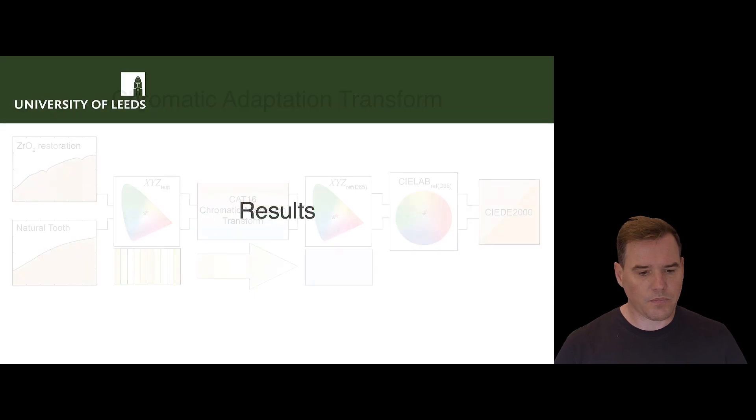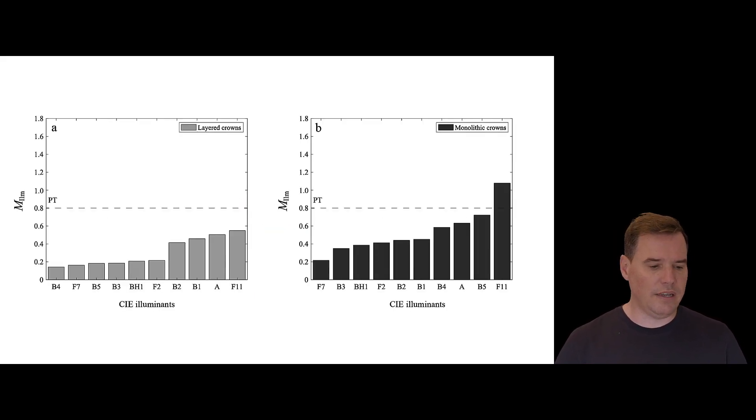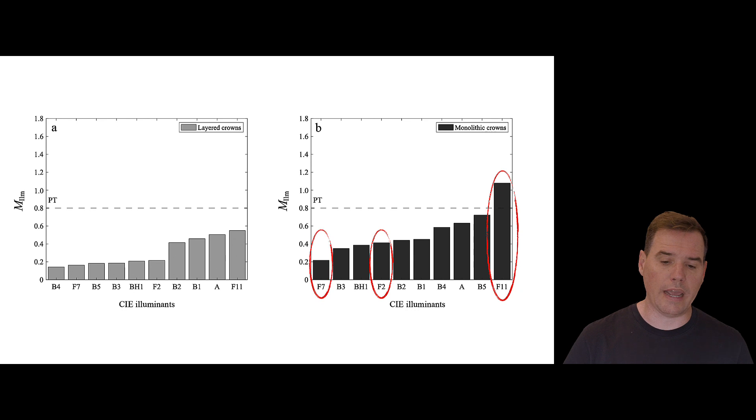So what were the results? So in these two bar graphs here, we can see on the left hand side, the metamerism index for the layered zirconia restorations. And if you can see that on average, the color difference that were caused by switching from one illuminant to another illuminant was less than the perceptibility threshold of a delta E of 0.8. So you'd never recognize this. And in the case of the monolithic crowns, the picture is very similar. The switch from one illuminant to another illuminant only really caused very small color differences. The ones that stand out here slightly, although still below the chosen threshold of 1.8 for clinical acceptability, was for illuminant F11.